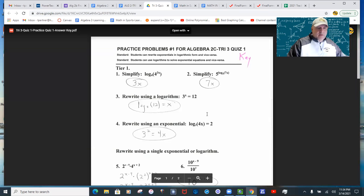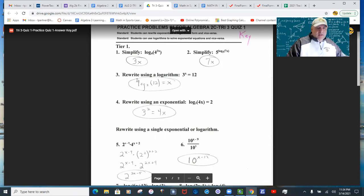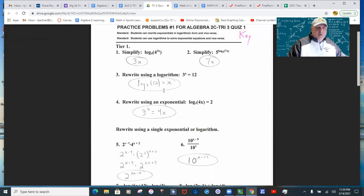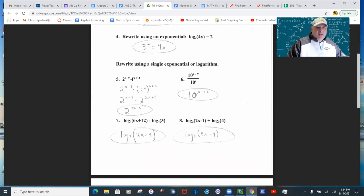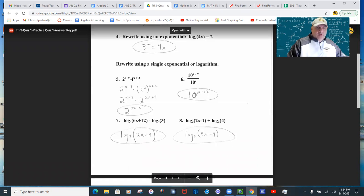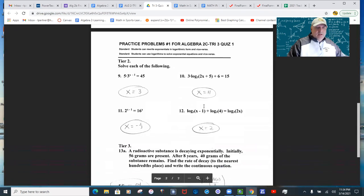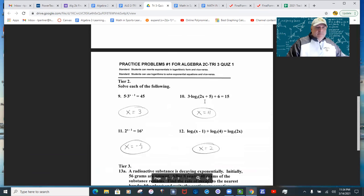So on the quiz, it looks like this. So just basic simplification, writing one in terms of the other, and then solving exponentials and logarithms to each there. And actually,